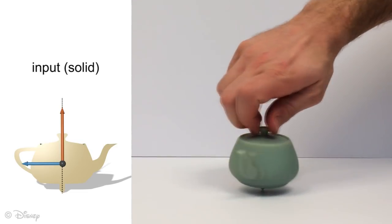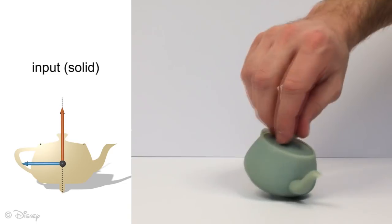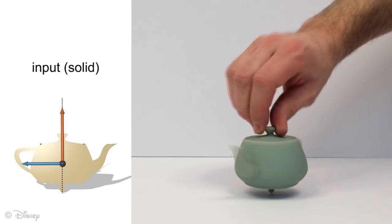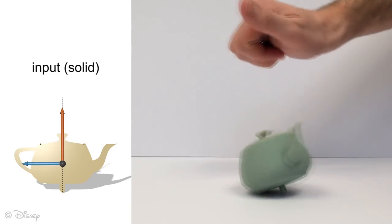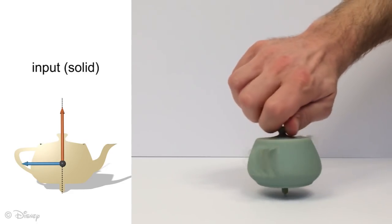In this initial design for a spinning teapot, the principal axes of the inertia tensor are already well aligned, as can be seen by the up-pointing red axis. However, the solid model does not spin. This is due to a poor ratio between dominant and lateral principal moments.